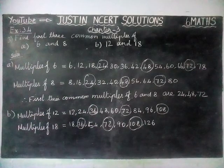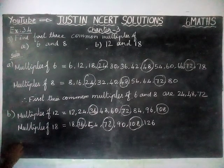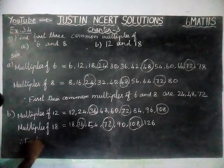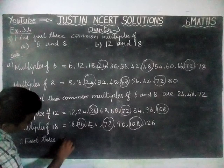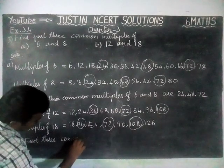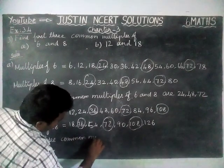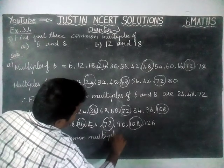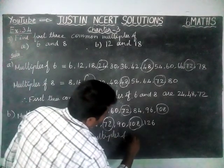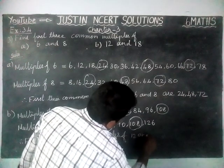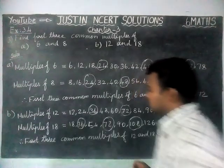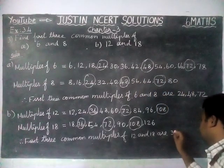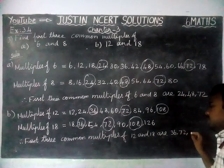So, the first three common multiples. Therefore, the first three common multiples of 12 and 18 are 36, 72, 108.